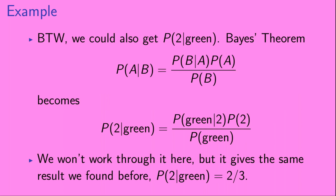And lastly, we took the 15% and the 30% at the bottom of the page and added those together — those summed to P of green. So Bayes' Theorem just reflects the picture we drew the first time around. By the way, we could also get P of 2 given green. Bayes' Theorem becomes P of 2 given green equals P of green given 2 times P of 2 divided by P of green. We won't work it through here, but it gives the same result we found before: P of 2 given green equals 2/3.